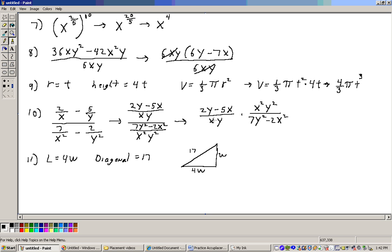Now at this point, we can cancel some things out. This xy cancels out with one of these, leaving me just with an xy. And I don't think there's any other term here that will cancel out. There's nothing else that factors out of that. So I would just be left with xy times 2y minus 5x over 7y squared minus 2x squared.